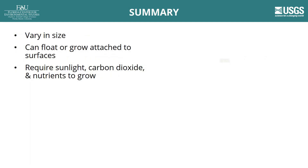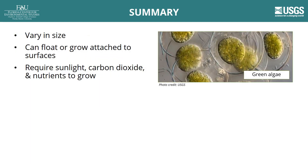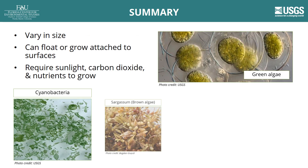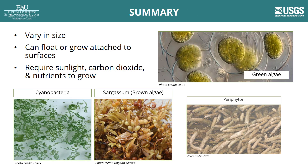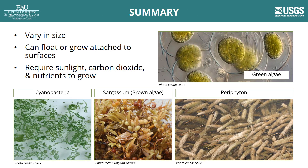In summary, algae vary in size from microscopic to large enough to see with the naked eye. Algae can float in the water or grow attached to surfaces. Most algae require sunlight, carbon dioxide, and nutrients, including nitrogen and phosphorus, to grow through photosynthesis.